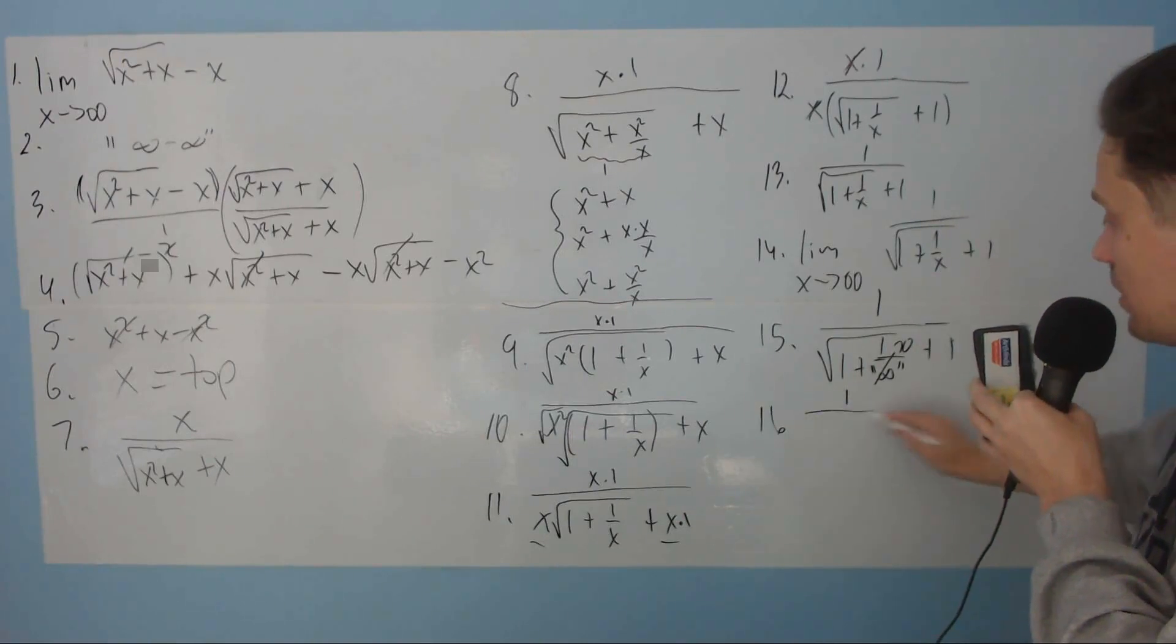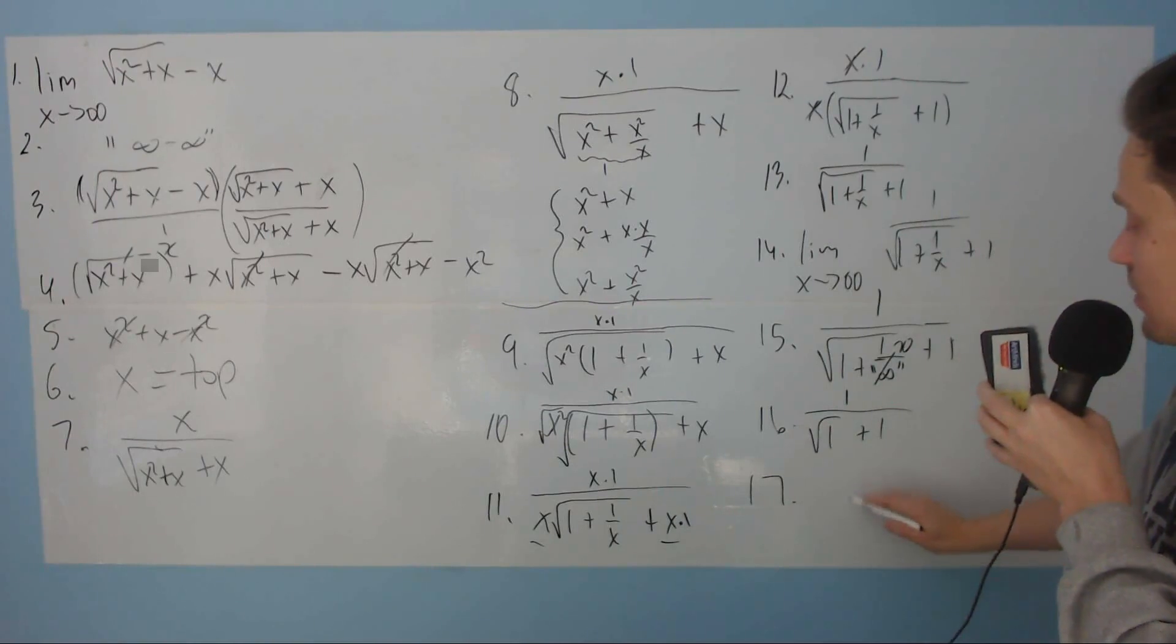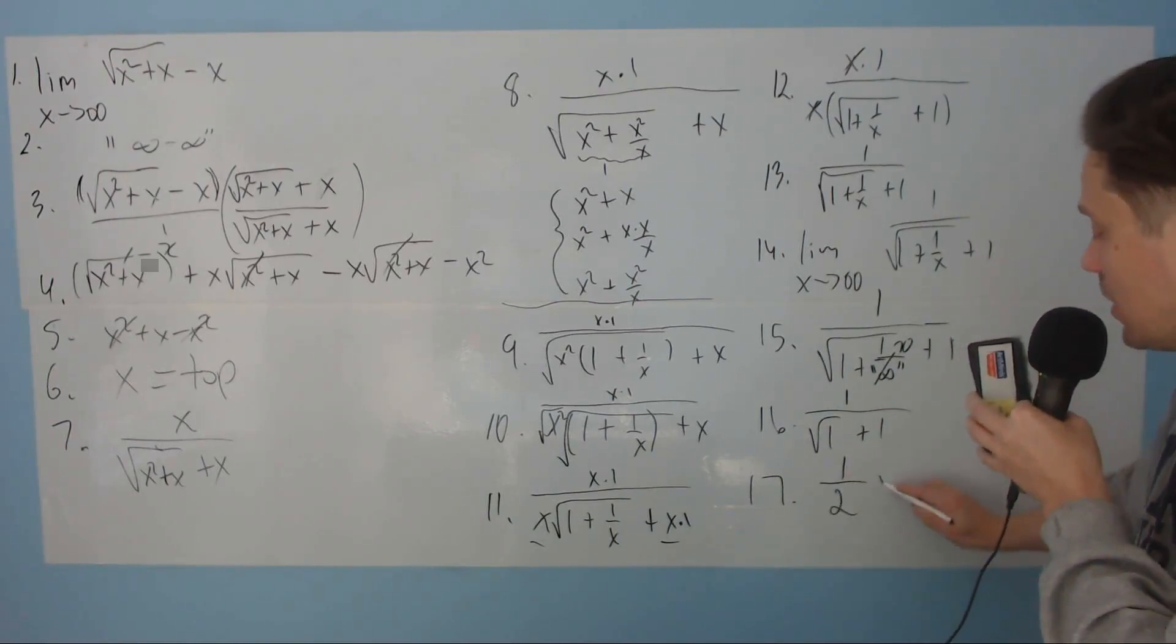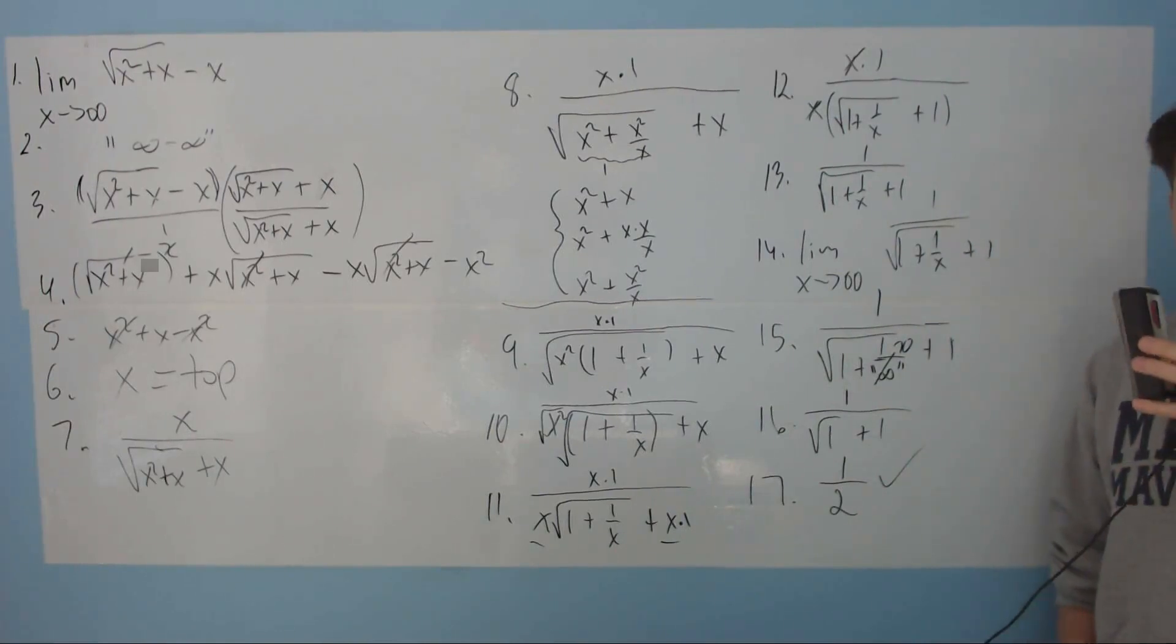Which lastly, at step 17, becomes 1 over 2. And that is the value of the limit. So thanks so much for watching. Leave a like. I hope this has been helpful. I've shown you as much detail as I know how to show. I'll see you in another video.